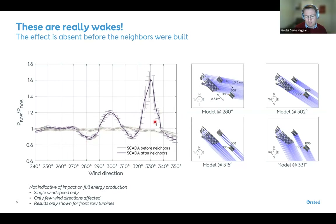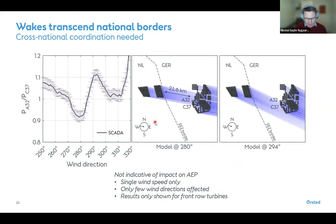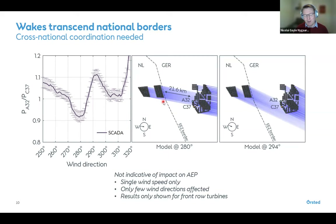A final observational example: our target wind farm is in the German Exclusive Economic Zone, while the neighbor producing the wake — the Gemini wind farm — is in Dutch waters. We can clearly see in the data that wakes transcend national borders. There is no fence stopping them, suggesting that cross-national coordination is needed when planning wind farms for the future build-out.